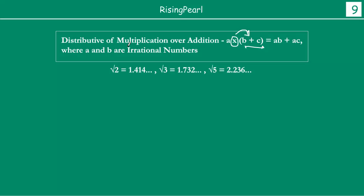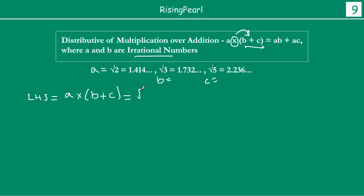What this property is stating is that this is valid for all irrational numbers. That means if A, B and C are irrational numbers, then the distribution of multiplication over addition is actually valid. We will quickly take an example and see if it is indeed true. So A is square root 2, B is square root 3, and C is square root 5. The left hand side states A multiply by B plus C, which in this case is square root 2 multiplied by square root 3 plus square root 5.